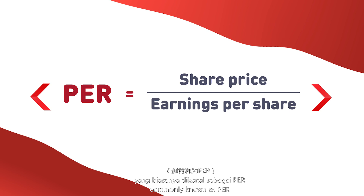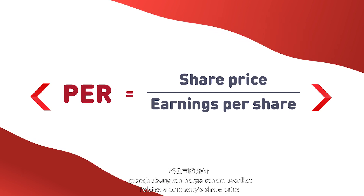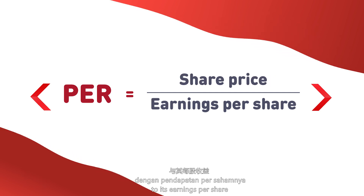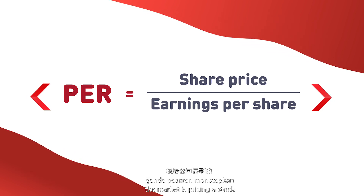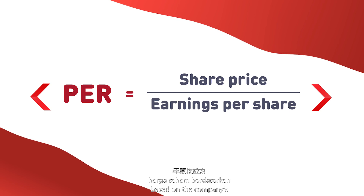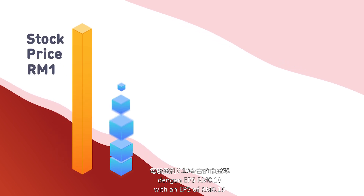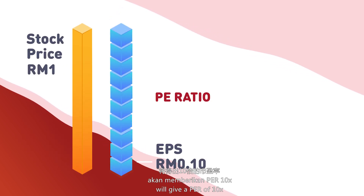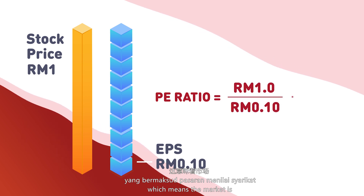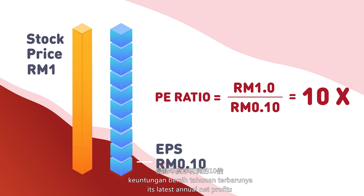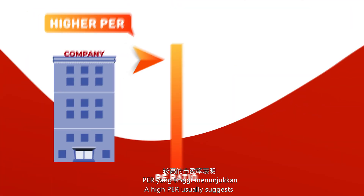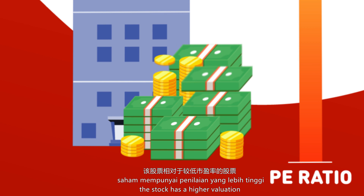Price-to-Earnings Ratio, commonly known as PER, relates a company's share price to its Earnings Per Share, measured in multiples. PER indicates how many times the market is pricing a stock based on the company's latest annual earnings. For example, a stock priced at RM1 with an EPS of RM0.10 gives a PER of 10x, meaning the market values the company at 10 times its latest annual net profits.